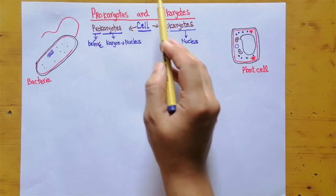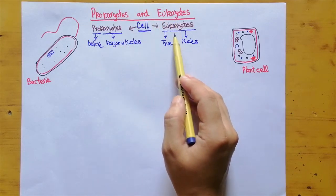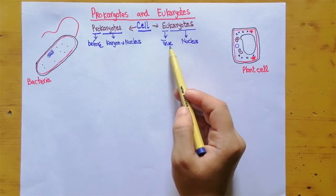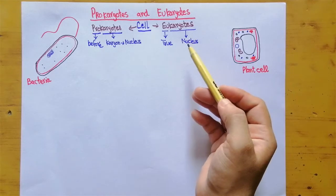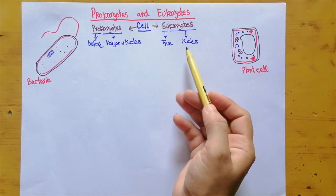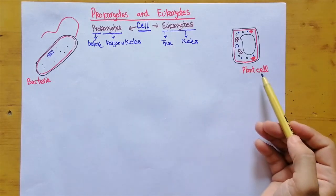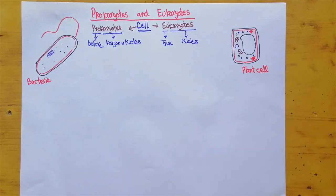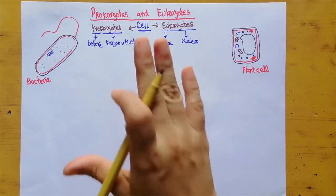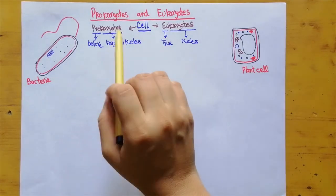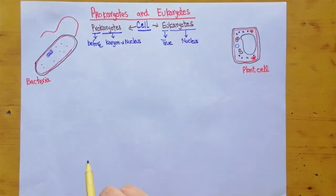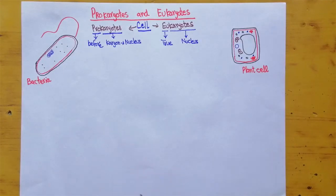Prokaryotes came before eukaryotes, so with evolution, when prokaryotes evolved into eukaryotes, the eukaryotes developed a true nucleus. To understand this concept we can take the examples of bacteria and plant cells. Welcome to Ahmed Coaching — today we are going to talk about prokaryotes and eukaryotes.